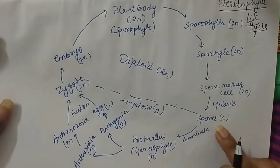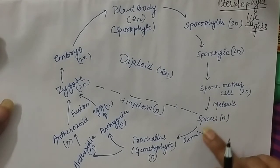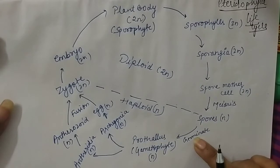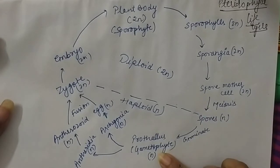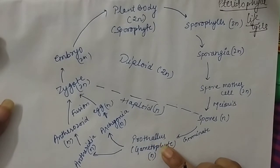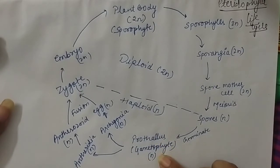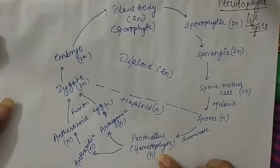These spores start to germinate and form another plant body which is small and inconspicuous but self-dependent. This structure is known as the prothallus. It means the plant has now entered the gametophyte condition.